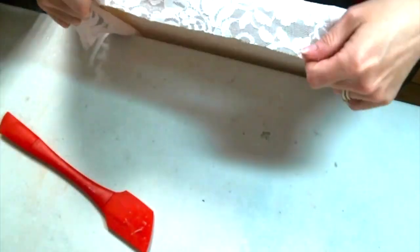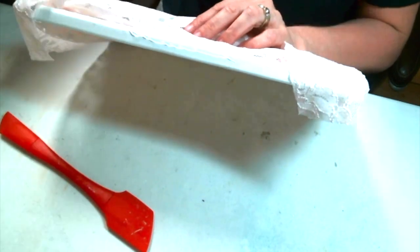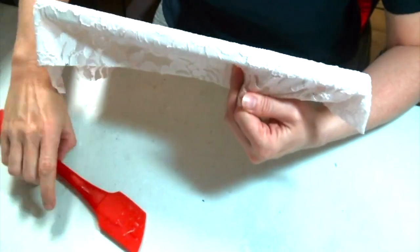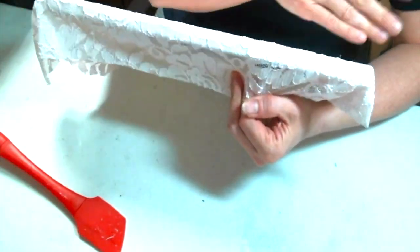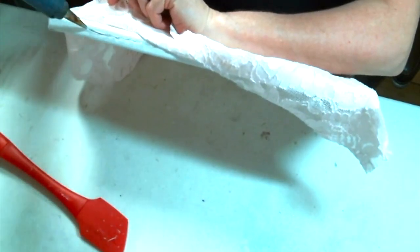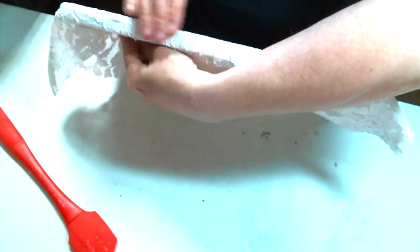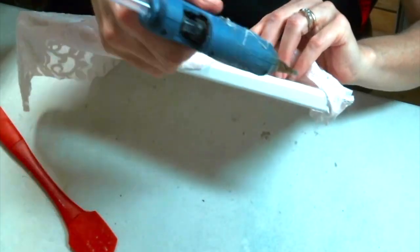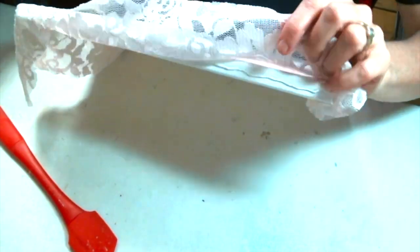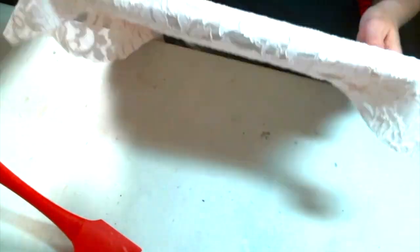Now once you get all of the edges glued down you're going to flip it over and we're gonna trim off the excess lace just so there's not so much bulk back there. You know I mean I guess you could have cut it better to fit in the beginning but that's not really how I roll so I kind of like to just cut it and then go back and trim it after I get it glued.